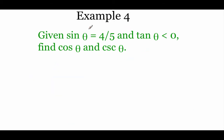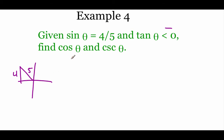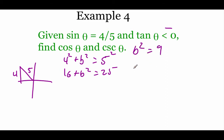In example 4, sine of theta is four-fifths and tangent is negative. Sine is positive in quadrants one and two, but tangent is negative only in the second quadrant, so we're working in quadrant two. Drawing a picture: sine is opposite over hypotenuse, giving 4 over 5. Using the Pythagorean theorem, 16 plus b squared equals 25, so b squared equals 9 and b equals 3, but in the second quadrant the x value is negative 3.